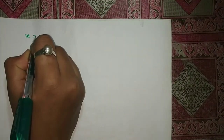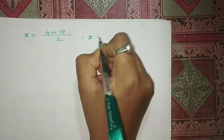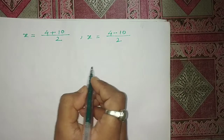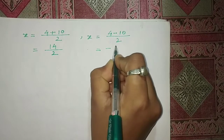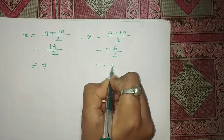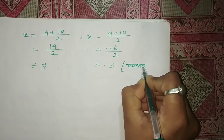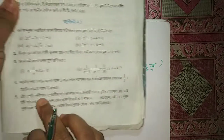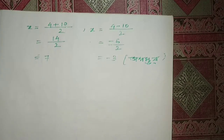4 plus or minus 10, divided by 2. x equals 4 minus 10 divided by 2, and x equals 14 divided by 2, and also minus 6 divided by 2. So x equals 7, and x equals negative 3.